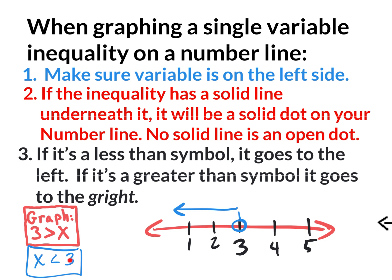This says x is less than 3. Could x be 0? Yes, because 0 is less than 3. Could x be negative 50? Yes. Could x be 2? 2.5? 2.9? 2.99999? Yes to all. Could x be 3? No, because 3 is not less than 3. That's why it's an open dot — it can get super close to 3 but can't actually be 3. If you had a 'greater than or equal to,' then 3 would be included and you'd use a solid dot.